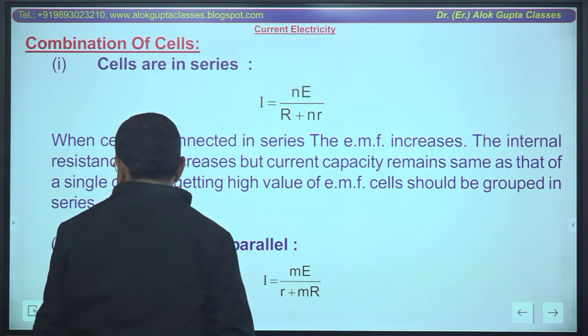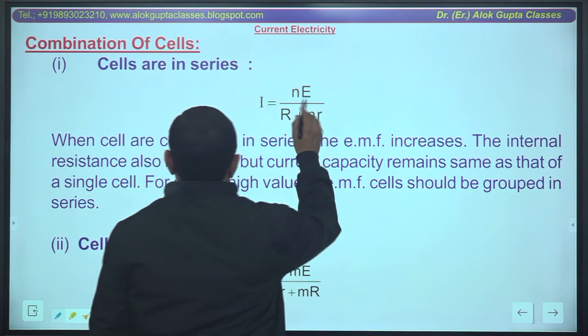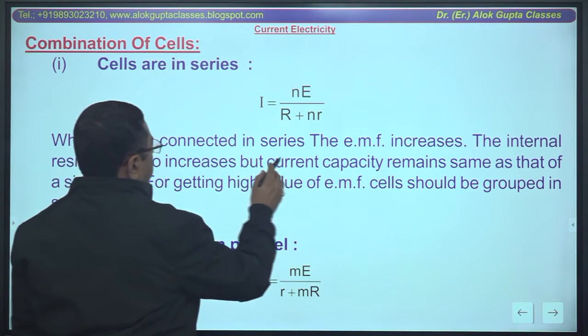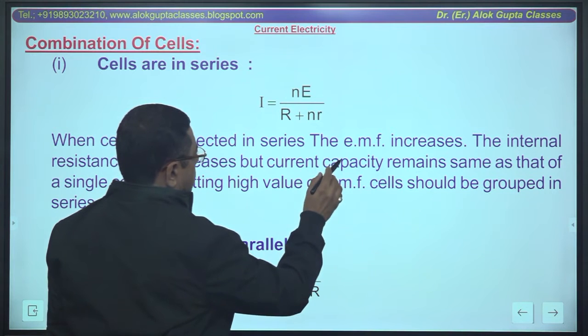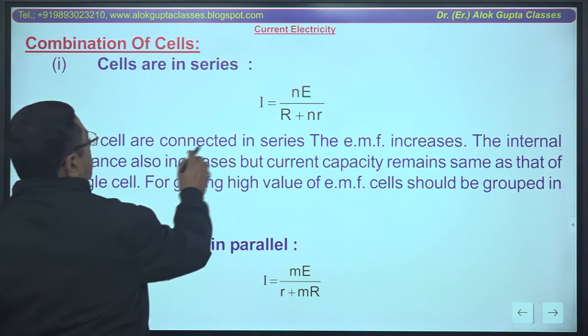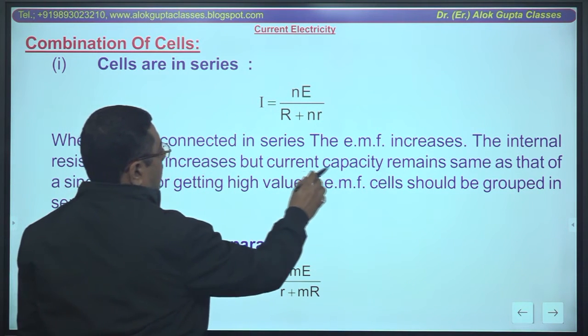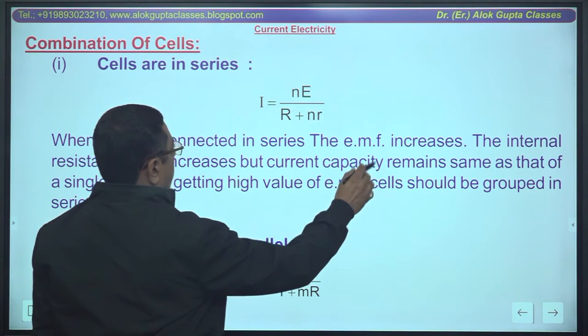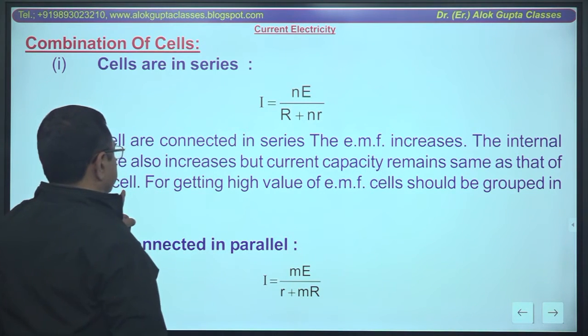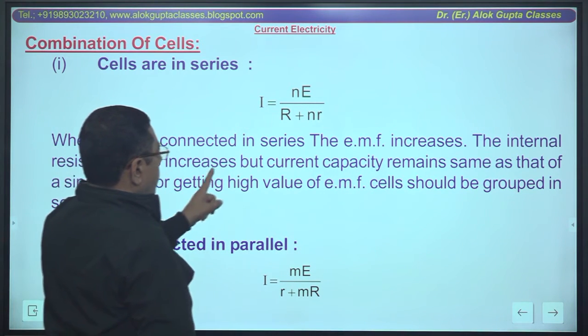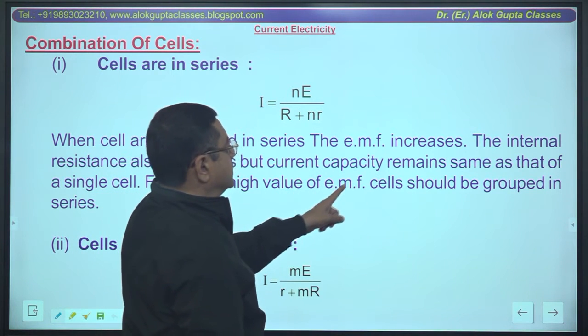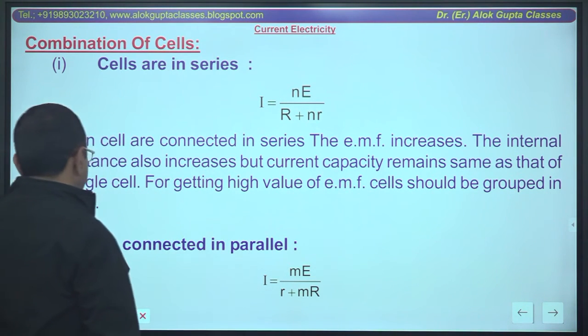Series combination of n cells: when cells are connected in series, the emf increases, the internal resistance also increases, but the current capacity remains same as that of a single cell. For getting high value of emf, cells should be grouped in series.